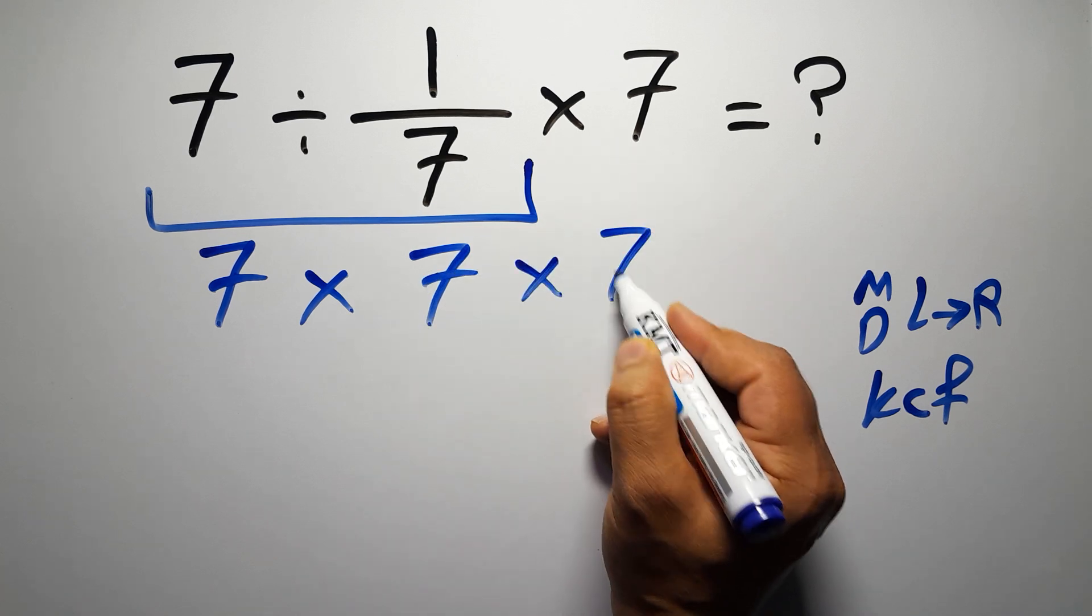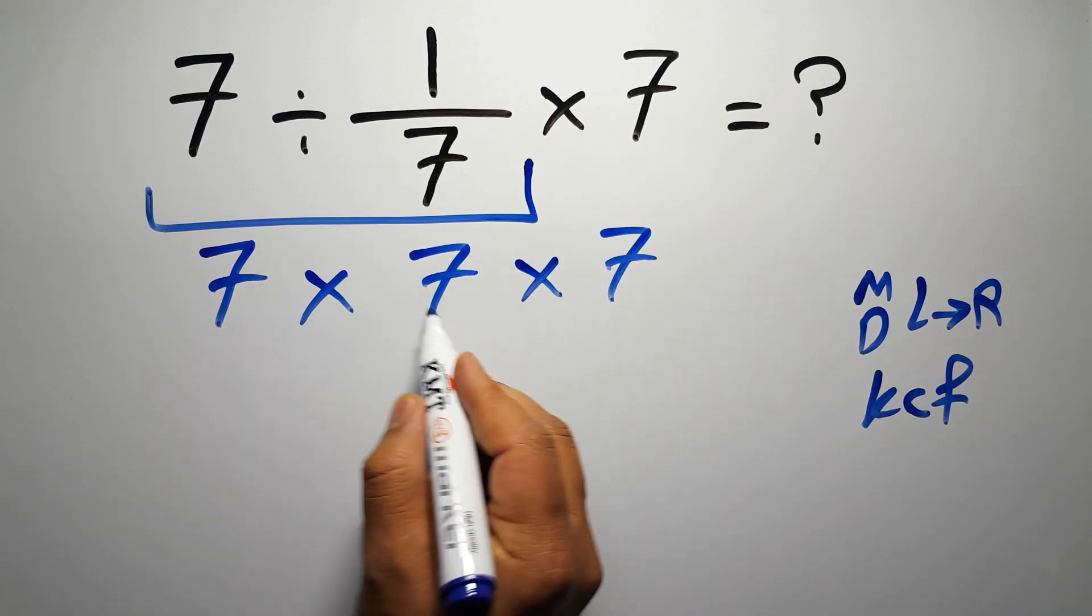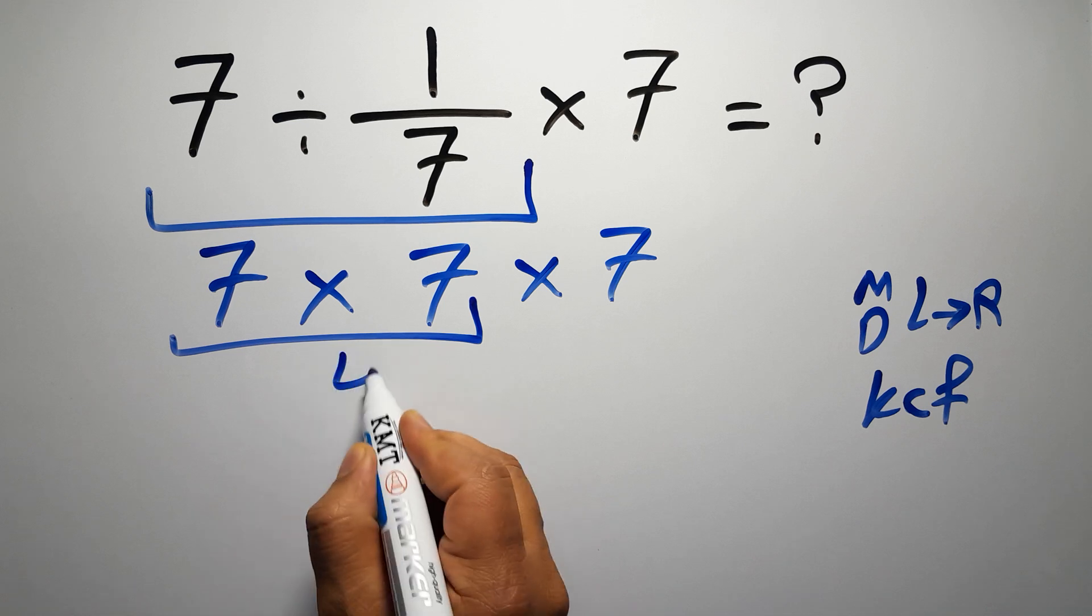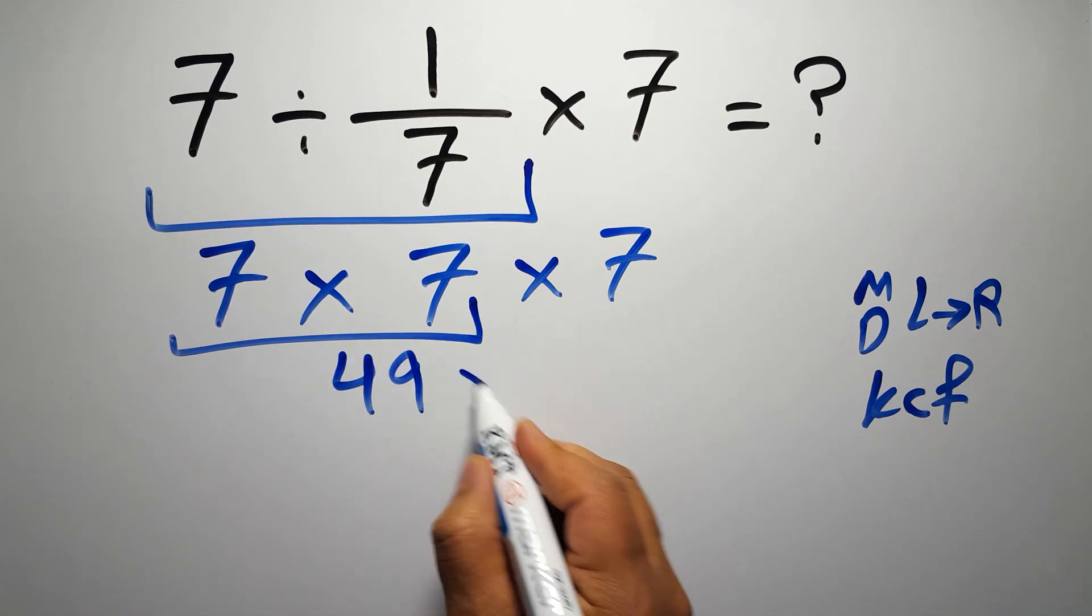And here we have times 7. So 7 times 7 gives us 49, and 49 times 7.